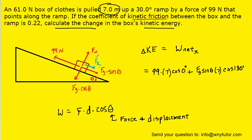Finally, we add the work in the x direction done by the frictional force: Fk times the distance of 7 meters, times the cosine of the angle between Fk and the displacement. Once again, that angle will be 180 degrees.